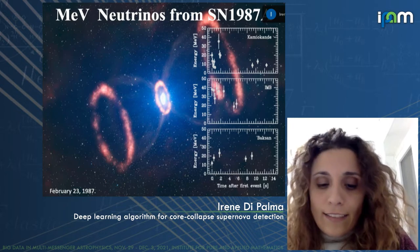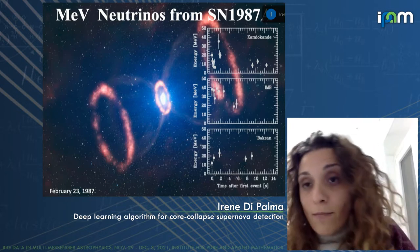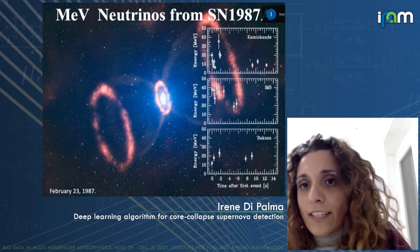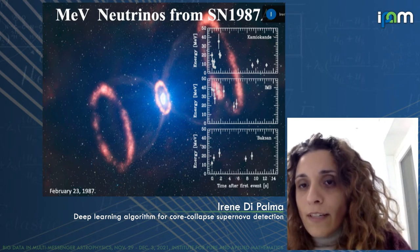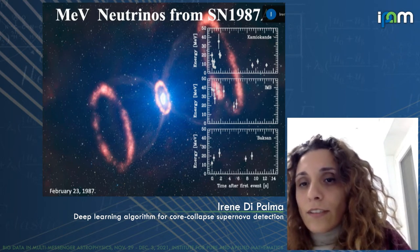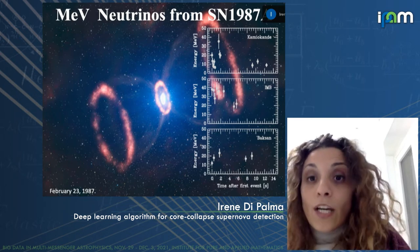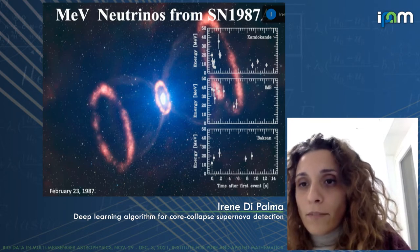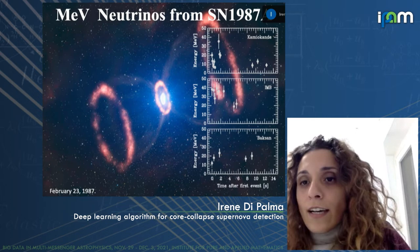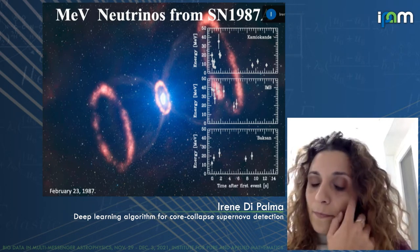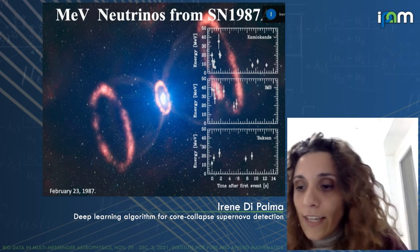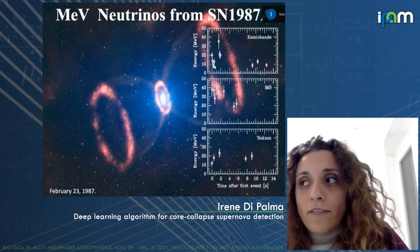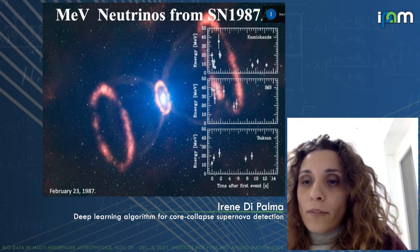This event was seen also in visible light. The plots on the right side of this slide show energy versus time for each of the detectors that could detect the neutrinos: Kamiokande, IMB, and Baksan. The total number of neutrinos detected was 24. This event happened in the Large Magellanic Cloud, at a distance of 52 kiloparsecs from Earth.